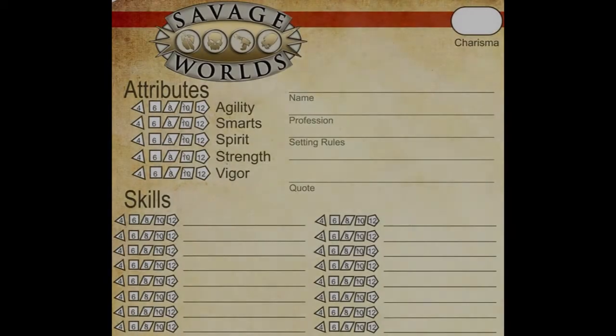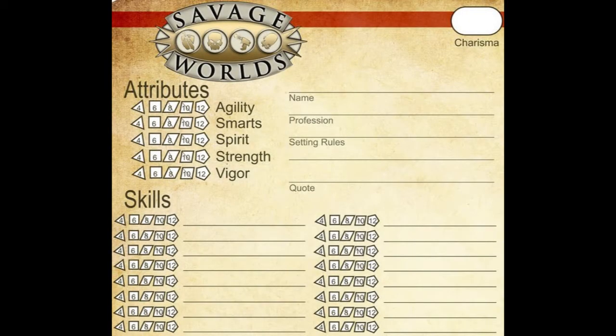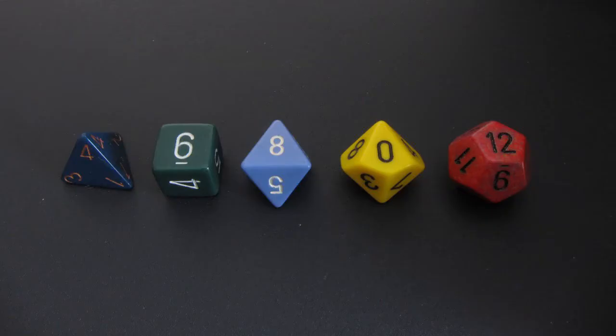Characters in Savage Worlds are defined by attributes and skills, otherwise known as traits. They start with a d4 die, then continue upwards to a d6, d8, d10, and d12 at the top.